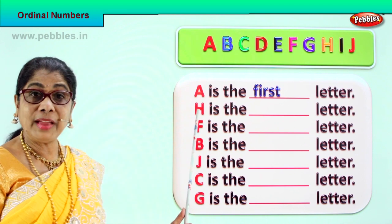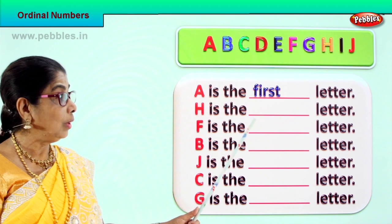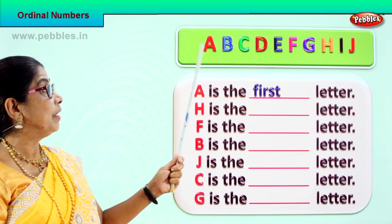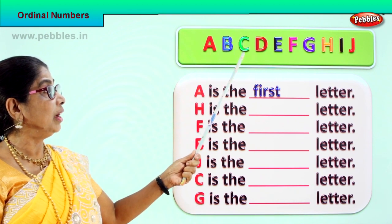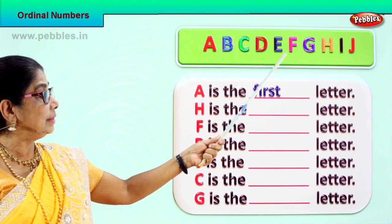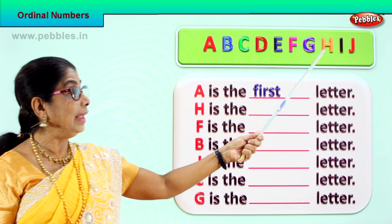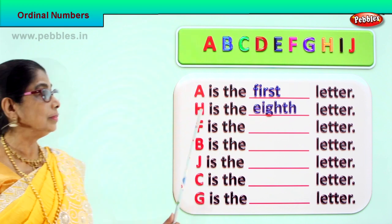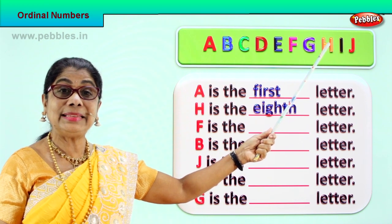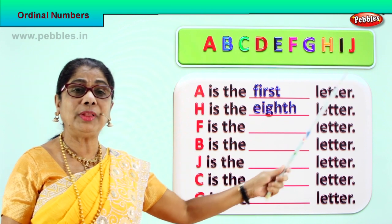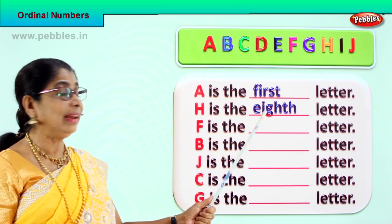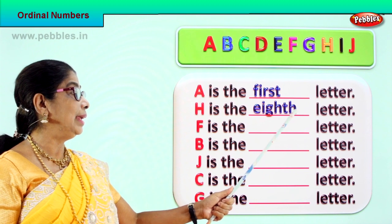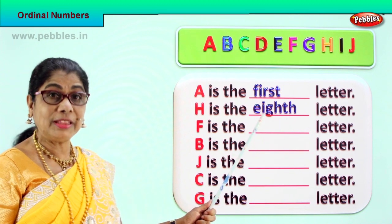Now tell me, we have H here. What ordinal number is H? Let's look: first, second, third, fourth, fifth, sixth, seventh — H is in the eighth place. H is the eighth letter. According to the ordinal number, it's the eighth. You already know to spell eight — all you need to do is add an H at the end.